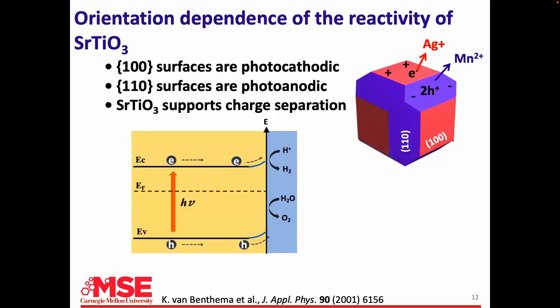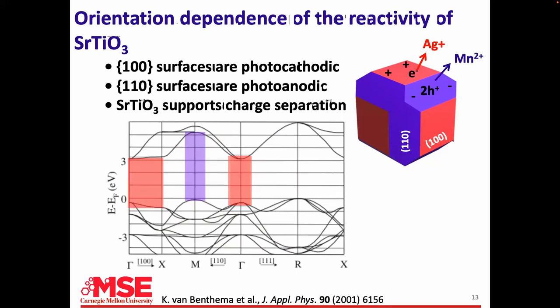Why do we think this is true? We have two opposite surfaces — one cathodic, one anodic. The standard in photochemistry is an energy-level diagram, but you can't get any information about anisotropy from that. If I take a band structure from the literature for strontium titanate, I mark the energy of my light as a red box. It can only excite transitions at the gamma point extending into the 1,0,0 direction. So the light I'm using will only excite electrons and holes with wave vectors in the 1,0,0 direction — and that's where I'm finding the electrons, so that makes sense.